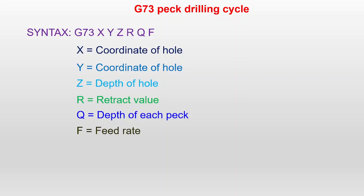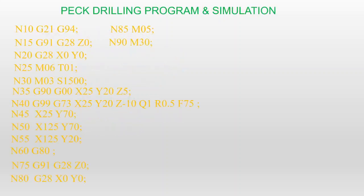To summarize the syntax: X coordinate of hole, Y coordinate of hole, Z is depth of hole, R is retract value, Q is depth of each peck, and F is the feed rate. This is the program for the peck drilling cycle, and we will show a simulation for better understanding.